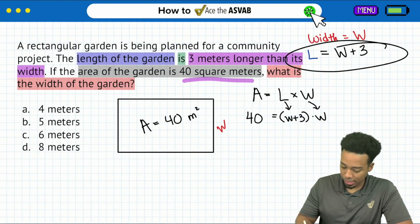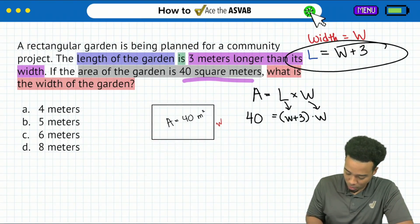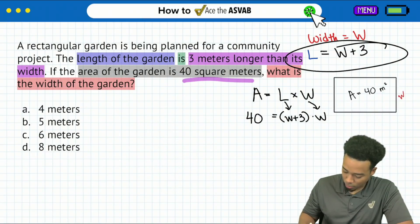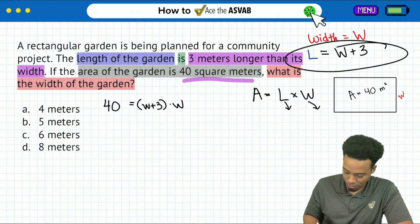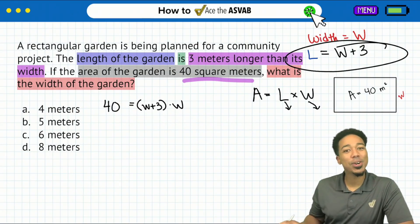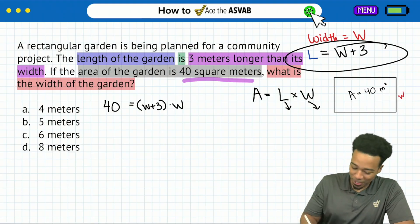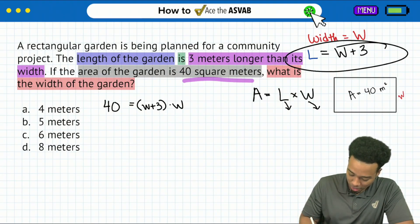So to get that done, allow me to get some more room for myself going. I'll make this smaller, put that right over here, then take all this, move you right over there. So let's go ahead and solve this, my party people. First step, we are going to go ahead and distribute the W into the W and the three.